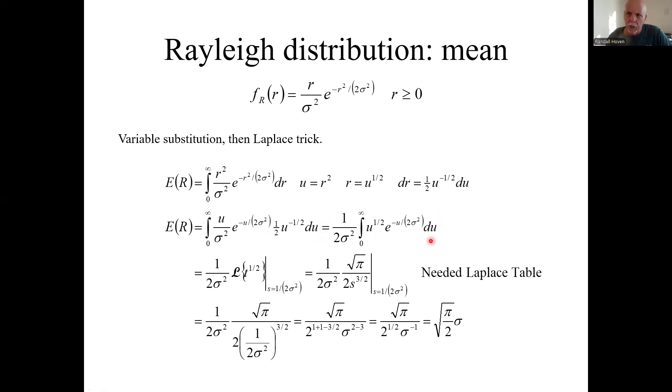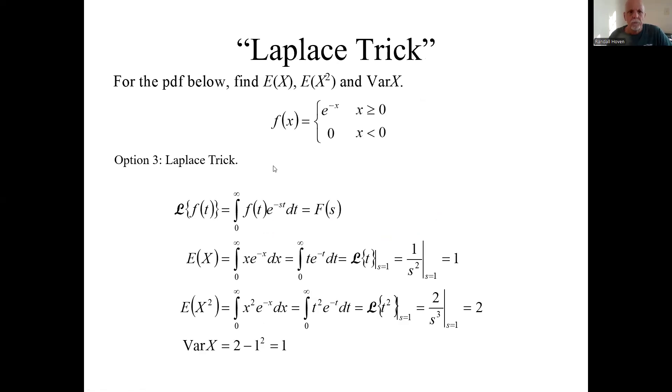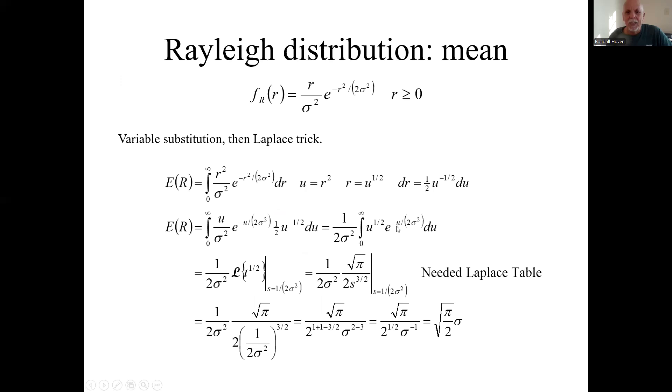So at this point we can use the Laplace trick. U is like t. So this is the Laplace transform of t to the one half, where s is one over two sigma squared. Right? We kind of compare these exponents. Anything that's not just minus t is s. So here, anything that's not minus u is s. So s is one over two sigma squared.